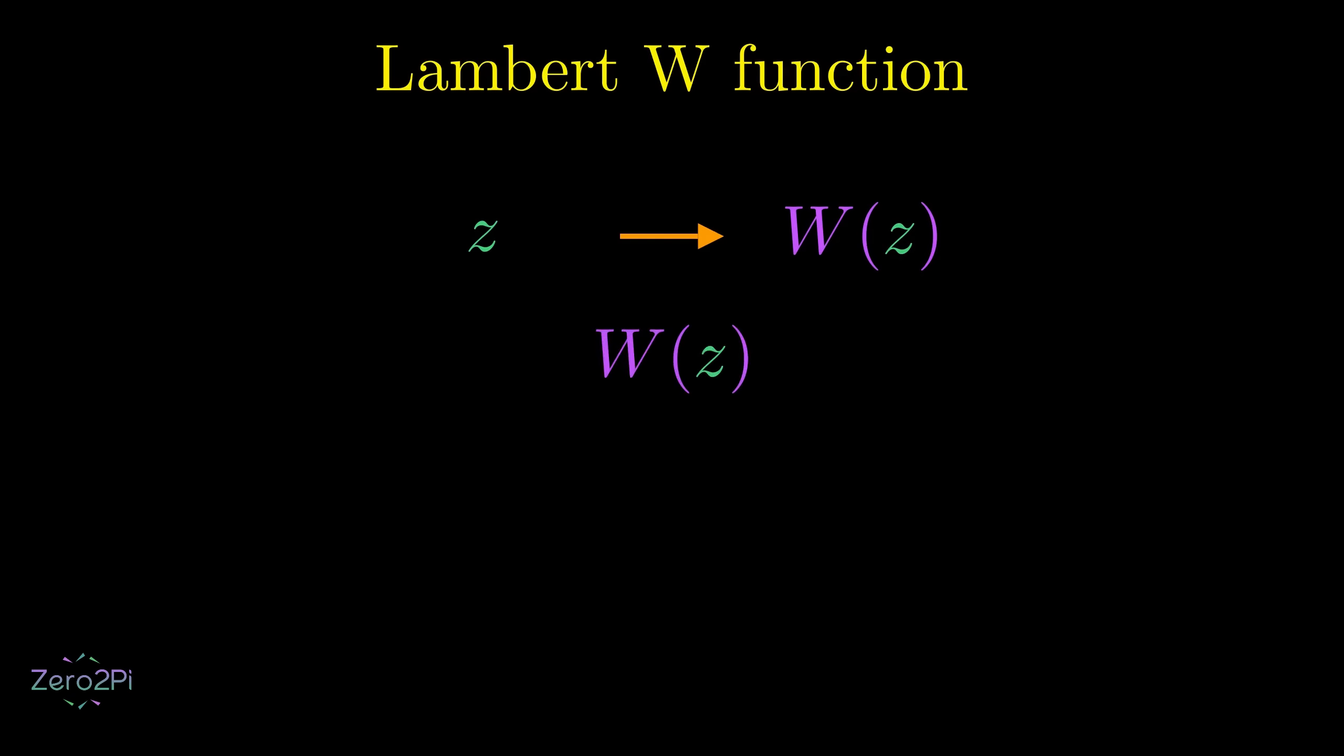It returns a number, a constant, which we call W(z). If you take that number and multiply it by e raised to the power of that number, then guess what? You get back your original number z.